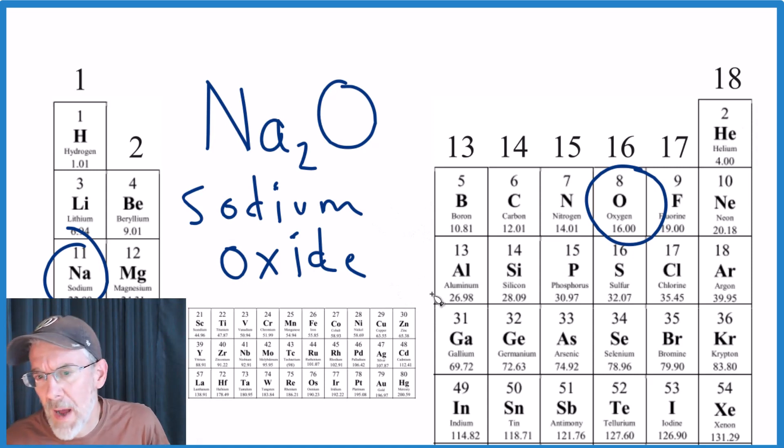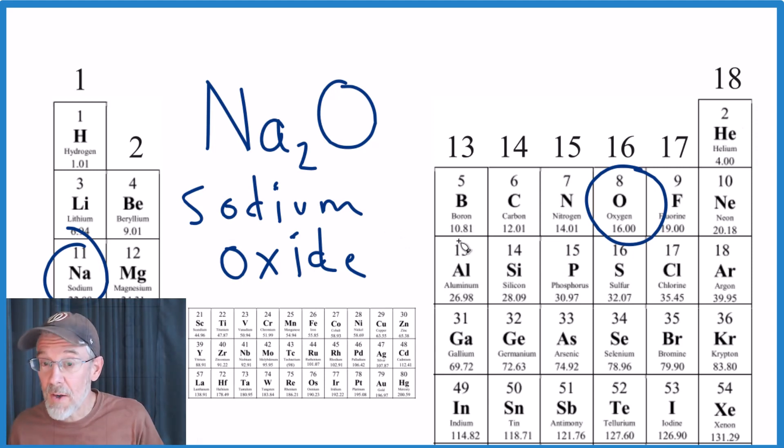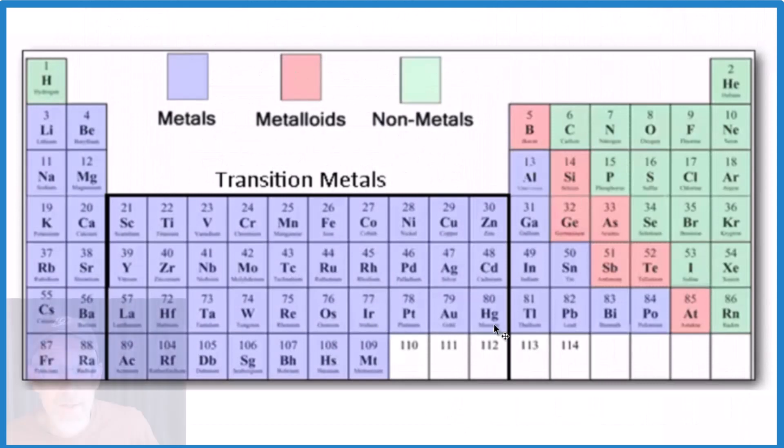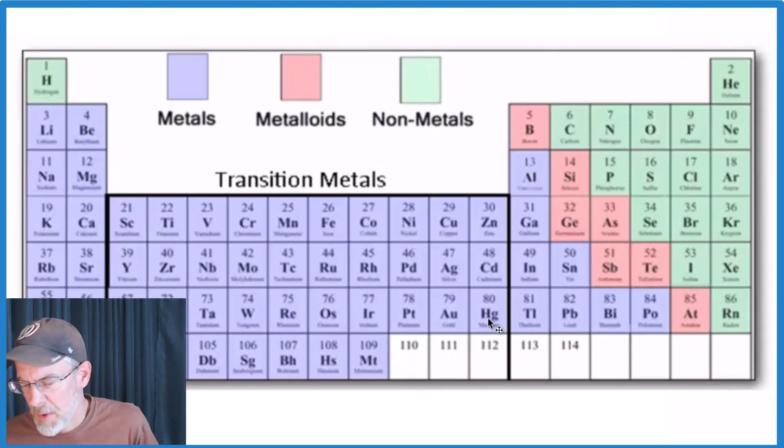Note we're also not looking at polyatomic ions right now—maybe in another video. But for simple ionic compounds, that's pretty much it. The key to all of this is knowing the trend for ionic charge for our groups, and it's also helpful if you know the metals and non-metals so you can identify an ionic compound.